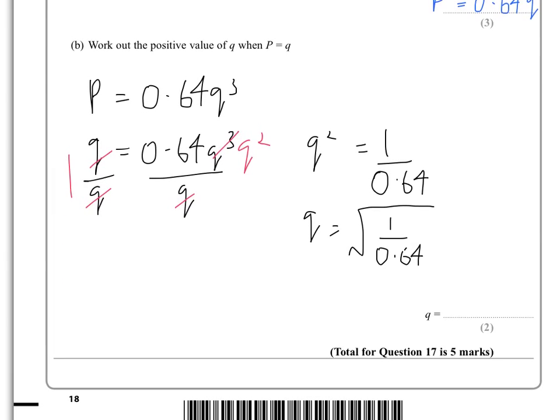And the square root of 1 over 0.64 gives us 1.25.